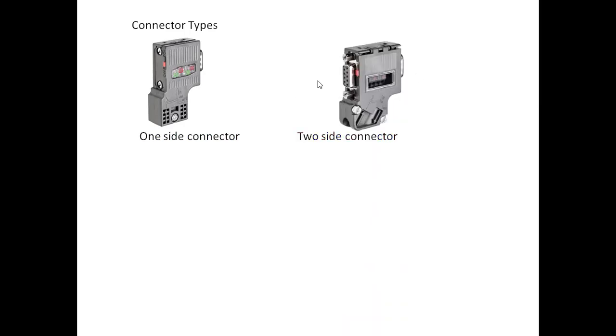Compared to RS-232 which has a maximum distance of only 50 meters, RS-485 has a much longer distance. Not only that, you can add multiple modules on RS-485, whereas on RS-232 you can add only one node — meaning only two devices can communicate with the main device. There are different connector types — Profibus connectors. One type has a connector on one side only, and another type has connectors on two sides — one at front and one at back — so you can extend the connection.